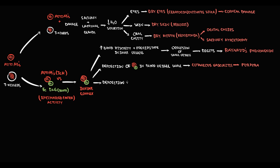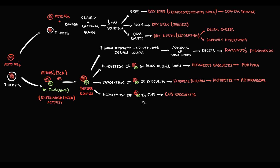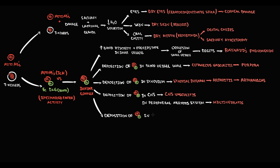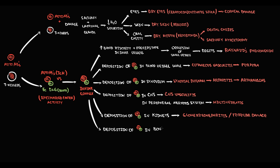Deposition of immune complexes in the synovium can cause inflammation of the synovium, resulting in arthritis, which most commonly manifests with articular symptoms. Deposition of immune complexes in the CNS can cause CNS vasculitis, or they can deposit in the peripheral nervous system causing mononeuritis multiplex. Deposition of immune complexes on the glomerular membrane in the kidney can cause glomerulonephritis, or it can cause direct tubular damage. Also, immune complexes can deposit in the bone marrow, where they disrupt normal production of blood cells, resulting in neutropenia, thrombocytopenia, or erythropenia.